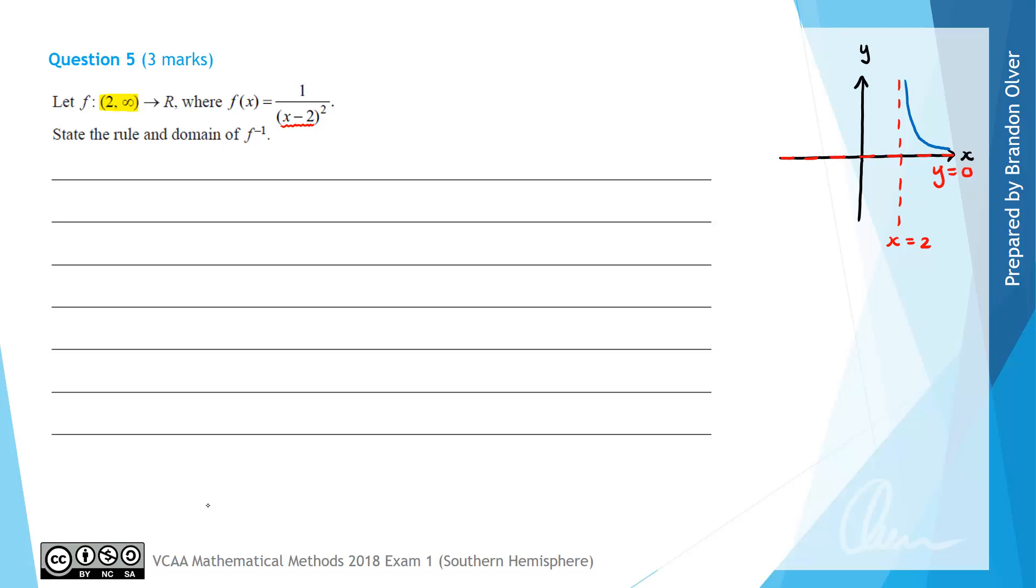Because we know where this question is heading I'm just going to set up a prompt for myself that I need to write it as f inverse of x equals the rule and I also need to state the domain x is an element of something. We'll fill those out at the end of this question.